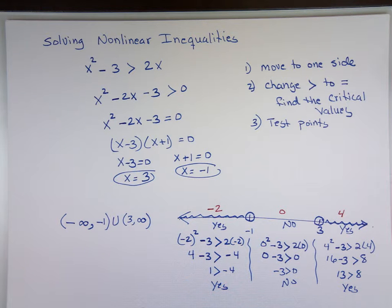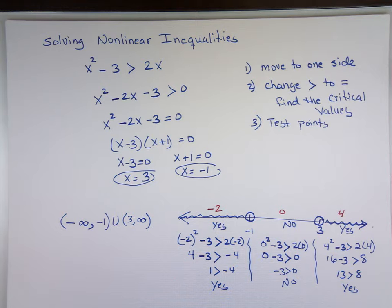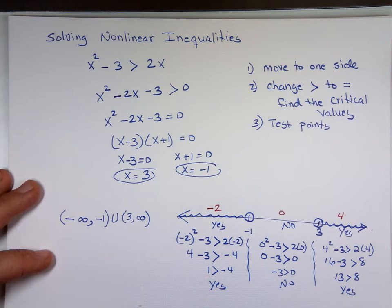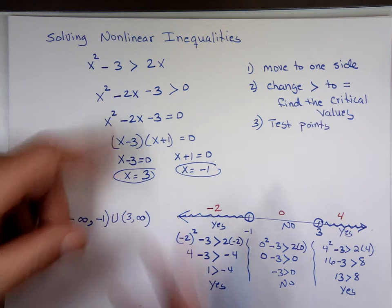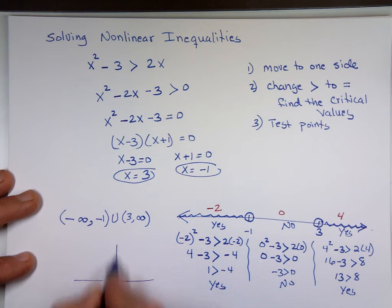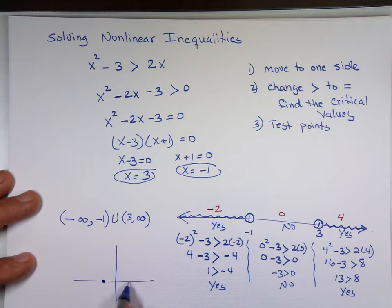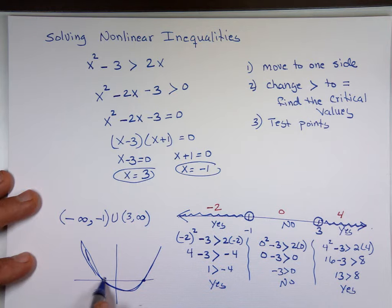We find the critical values first, then take a test point in each region. Non-linear doesn't always mean quadratic — it could be something else. Another approach is to graph the function. Since we want it greater than zero, graph it and see where it's above the x-axis. Based on the picture, the parabola is above zero to the left of -1 and to the right of 3 — that gives the same two pieces as our answer.